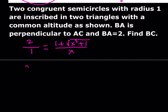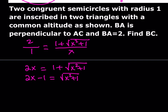Cross multiplying, 2x is equal to 1 plus the square root of x squared plus 1. We're going to square both sides, but first let's isolate the radical. When we square both sides, we get rid of the radical and can solve the equation.